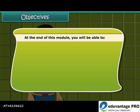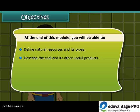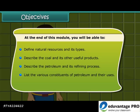At the end of this module, you will be able to: define natural resources and its types; describe coal and its other useful products; describe petroleum and its refining process; list the various constituents of petroleum and their uses; and describe natural gas and its importance.